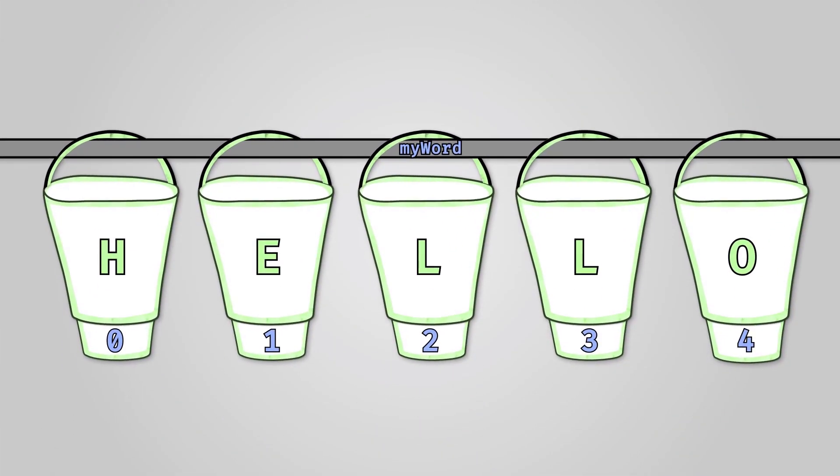If we remember from the last lesson, a one-dimensional array stores data in a single row going in one dimension horizontally. We used the metaphor of buckets on a pole.